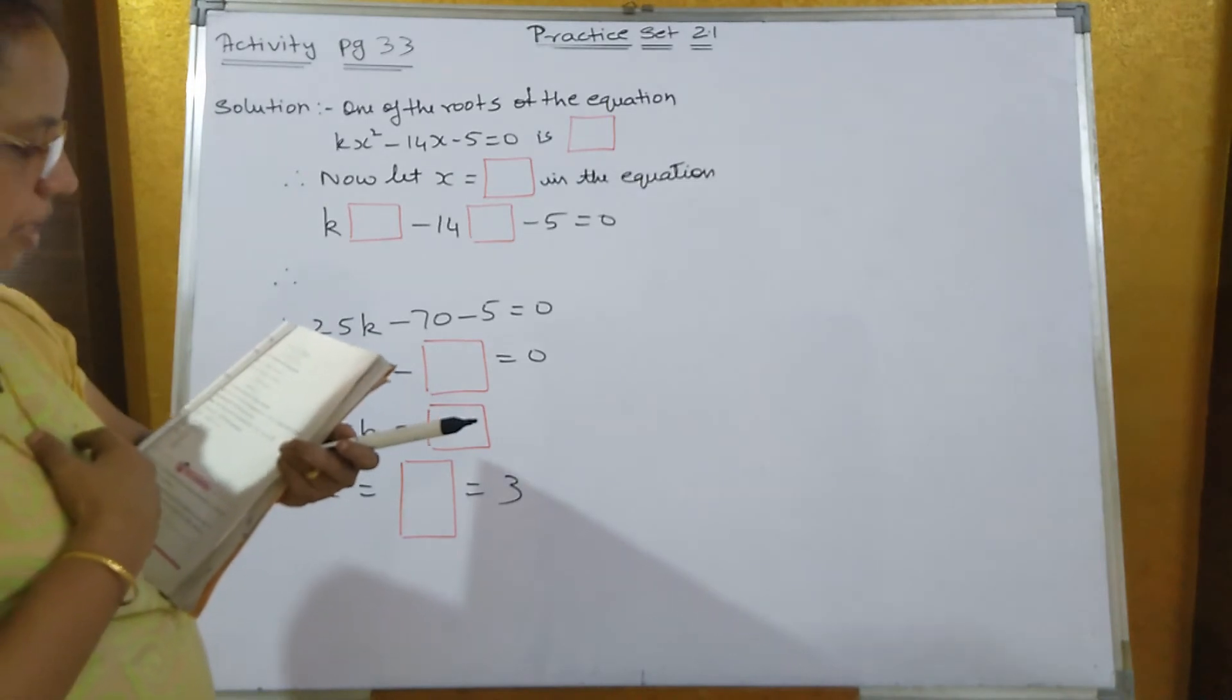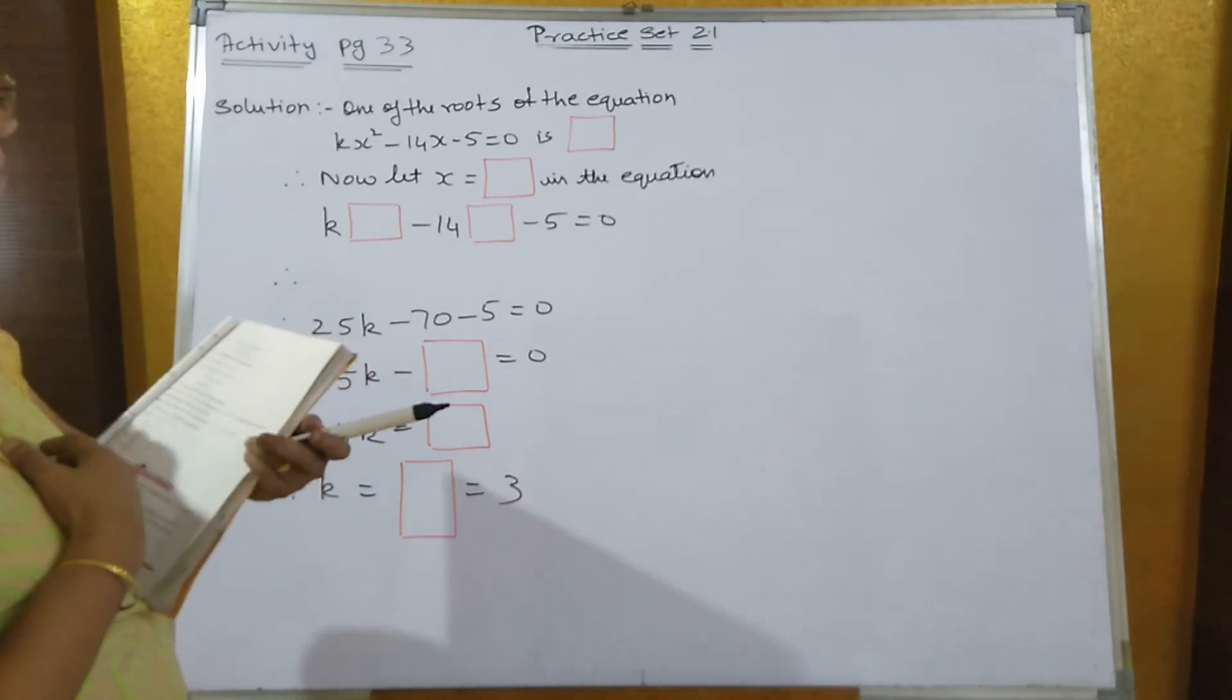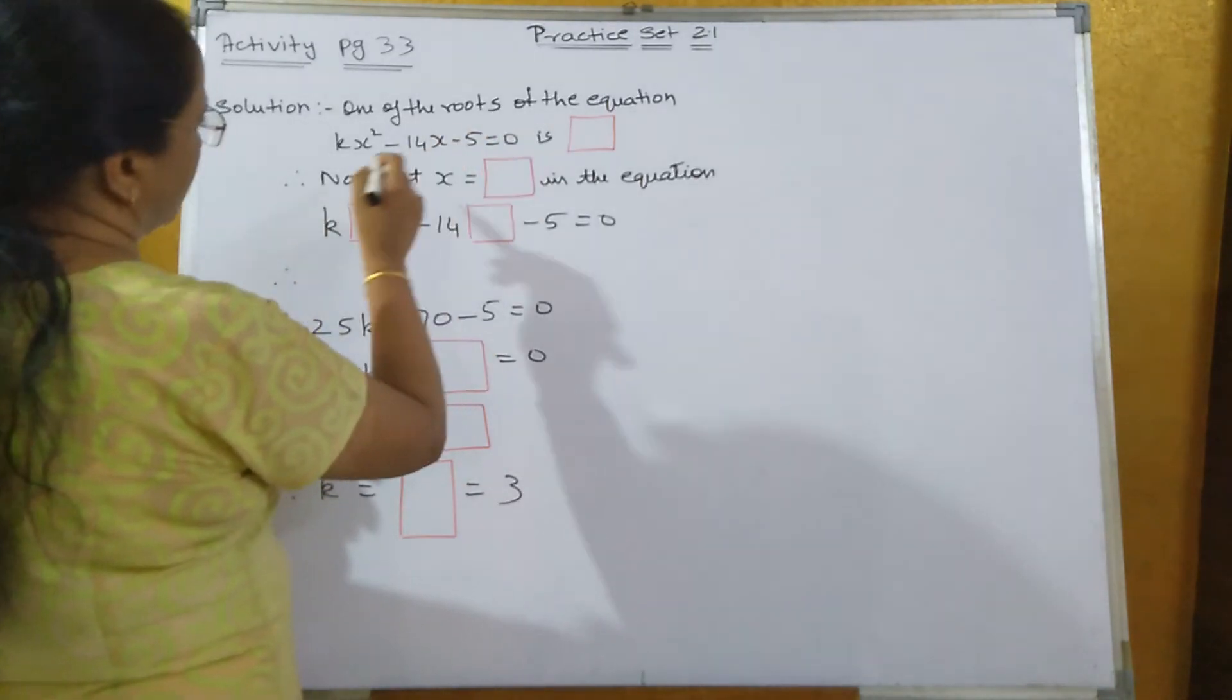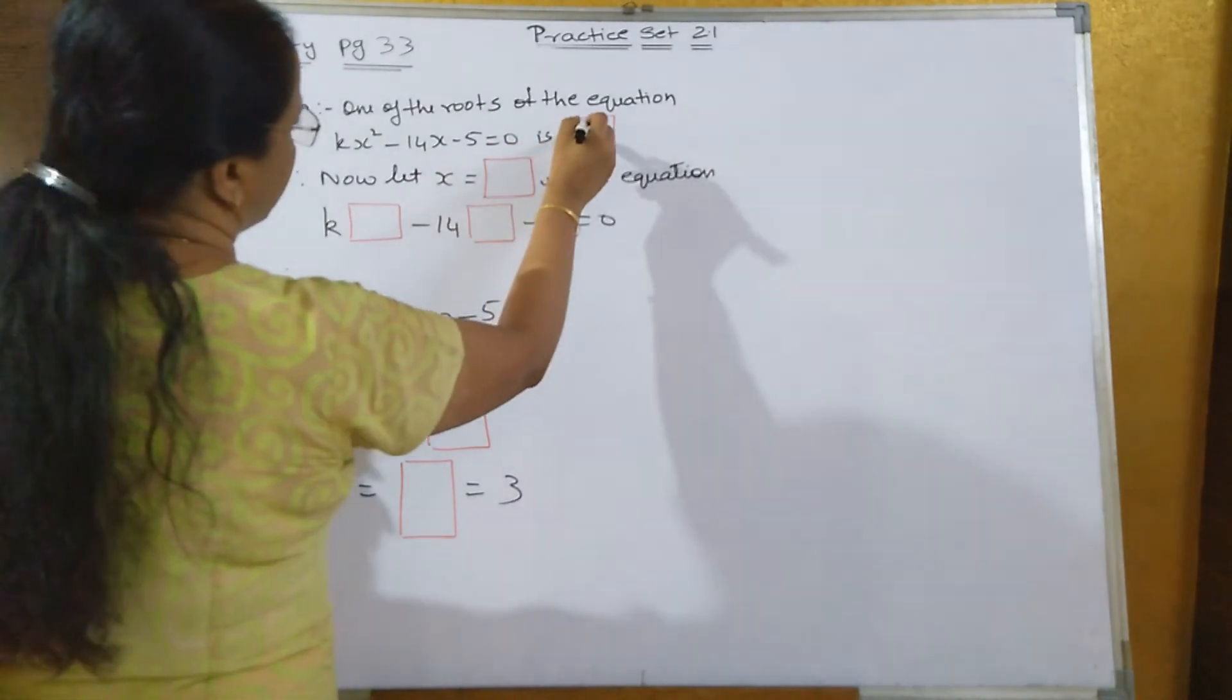The equation is kx² minus 14x minus 5 equal to 0. Then find the value of k by completing the data. Now one of the roots of the equation kx² minus 14x minus 5 equal to 0 is 5.